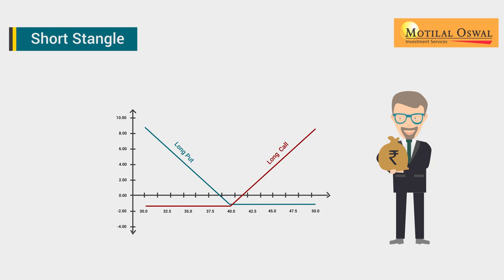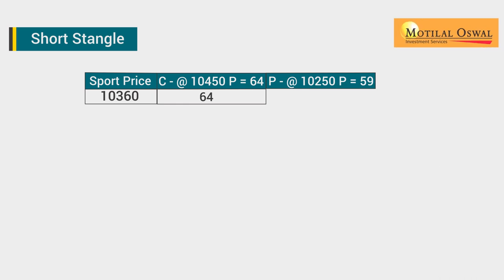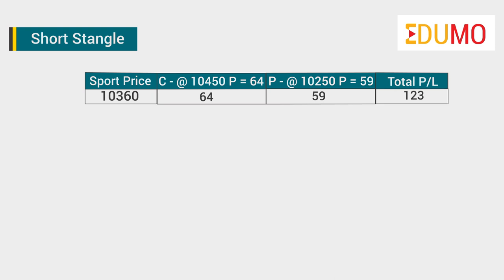Let's discuss with an example again. Nifty spot is trading at 10,360. We sell one call and one put out of the money strike prices: call at 10,450 strike price at a premium of 64, and put at 10,250 strike price at a premium of 59. Total premium received when the strategy is implemented is 64 plus 59, which is equal to 123.